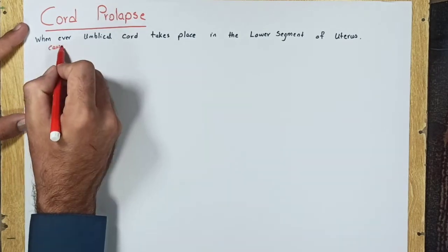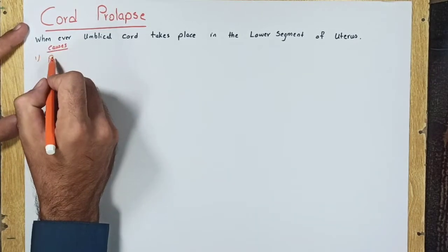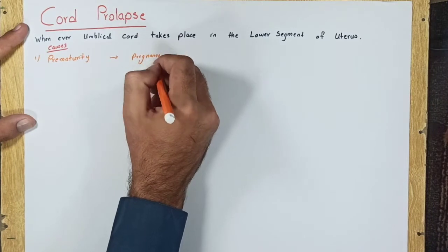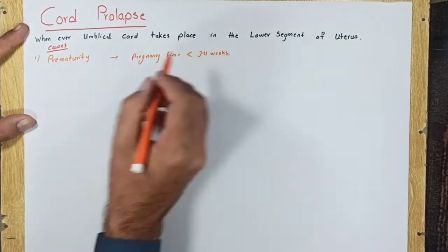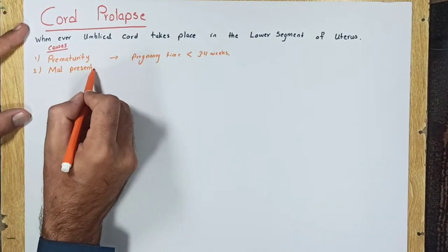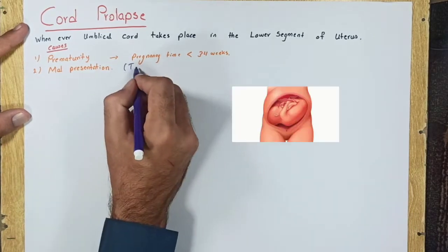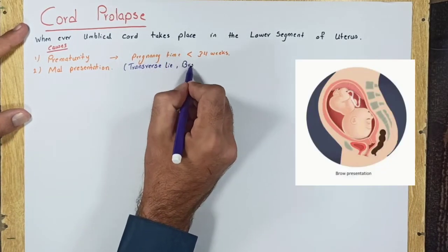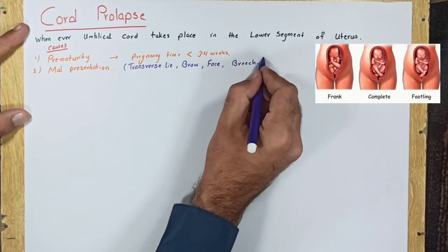The causes of cord prolapse are prematurity, meaning pregnancy time is less than 34 weeks, and malpresentation, examples such as transverse lie, brow, face, and breech presentation.